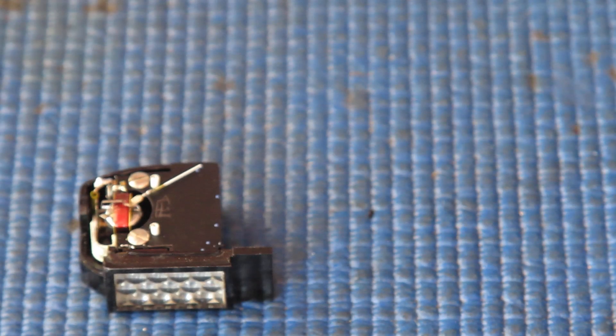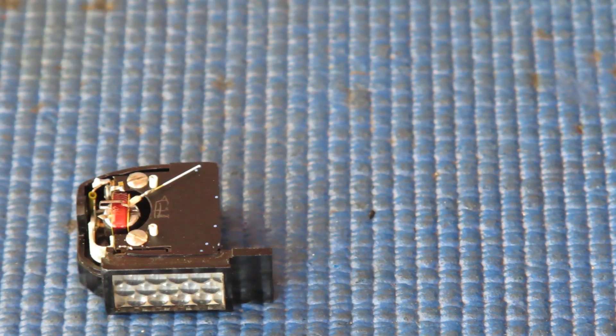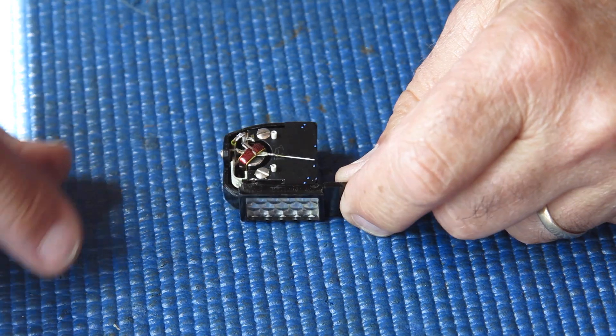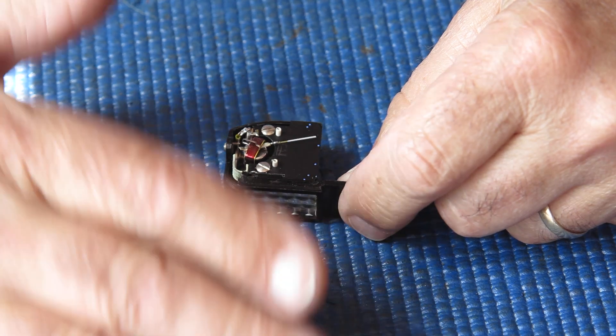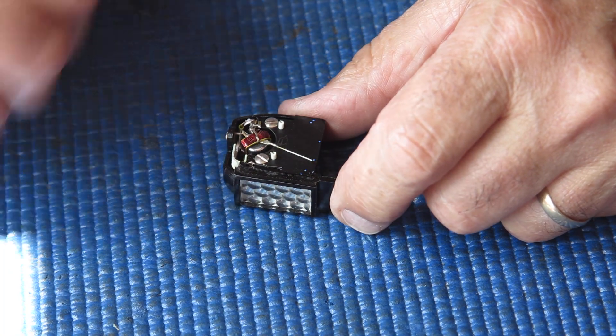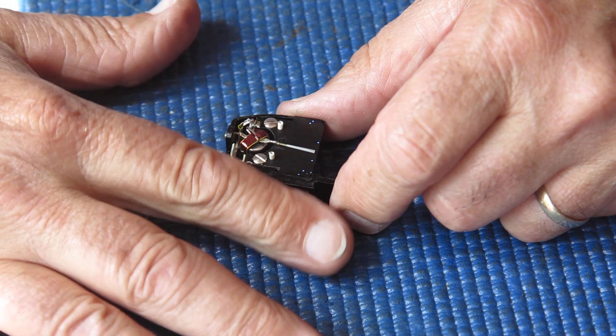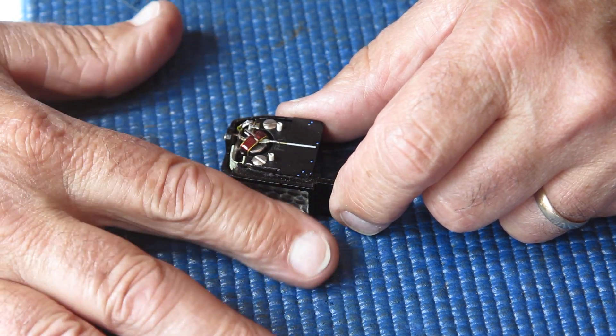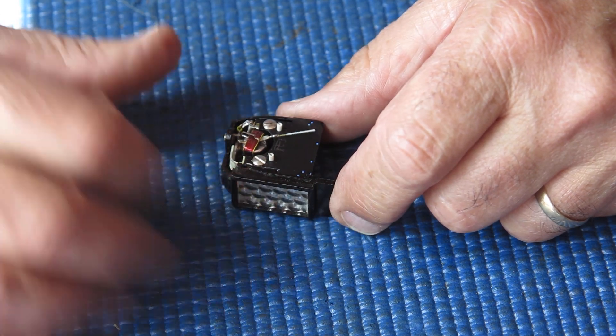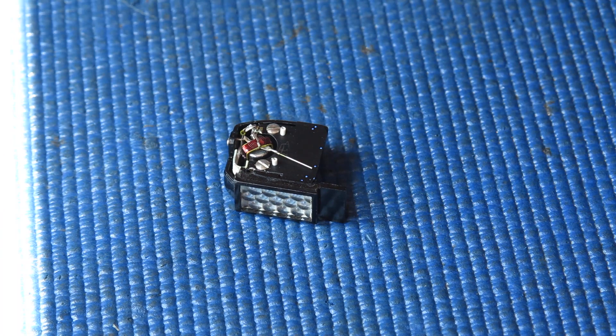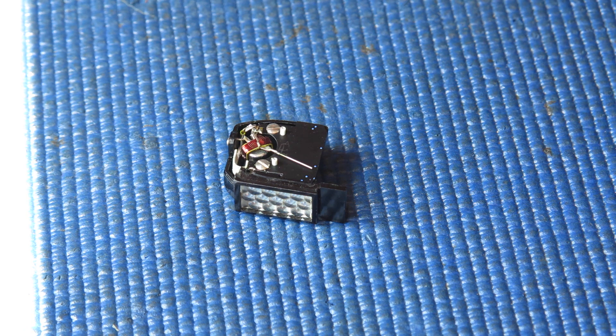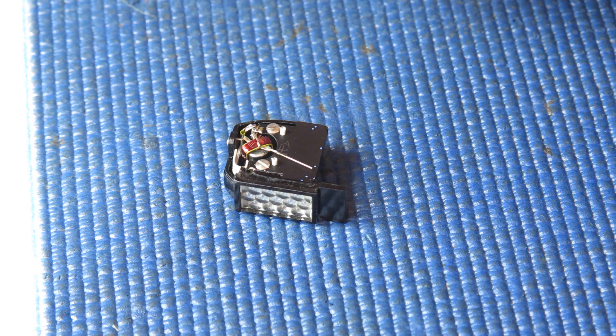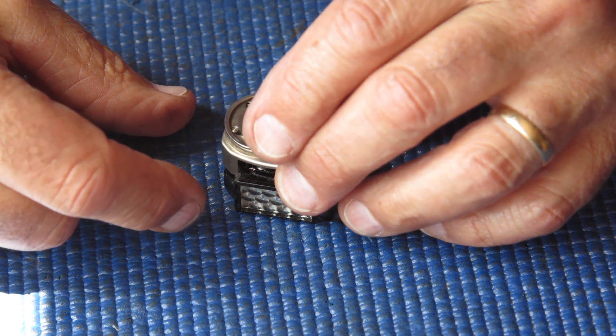Right. Solder those connections. And then we'll continue from there. As you can see I've got the selenium cell coupled now. And the movement responds to light. The selenium cell appears to be good. The movement certainly appears to be good. So we have coupled up a good selenium cell and a good movement. And between the two of them, it should be a useful exposure meter again.